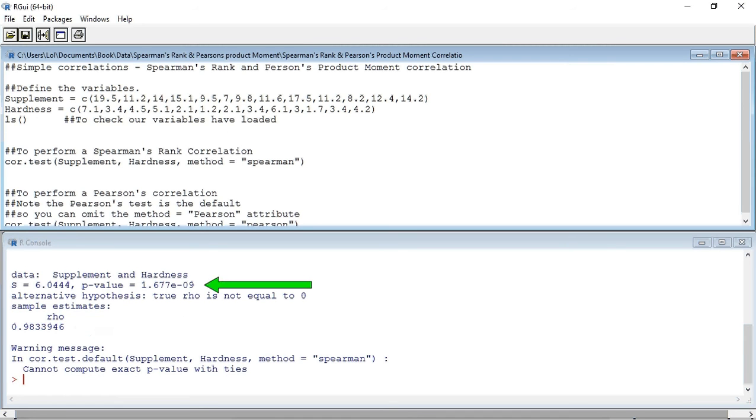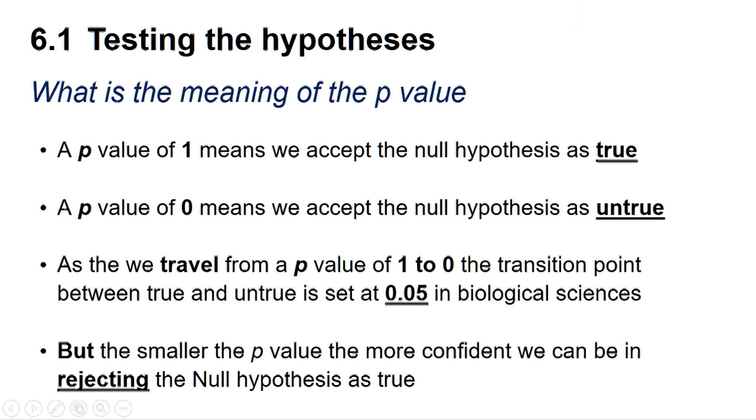In order to determine that, we need to look at the probability value, the p-value. And that is given two lines up here, and is equal to 1.677 times 10 to the minus 9. So what is the meaning of the p-value? A p-value of 1 means we can accept the null hypothesis as true. Whereas a p-value of 0 means we can accept the null hypothesis as untrue. As we travel from a p-value of 1 to 0, the transition point between true and untrue is set at 0.05 in the biological sciences.